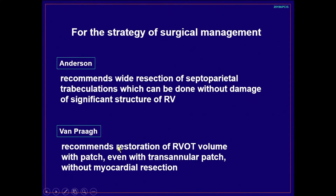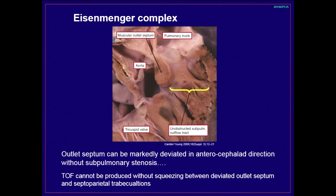They also have two different ideas for the strategy of surgical management. Dr. Anderson recommends wide resection of septoparietal trabeculations, but Dr. Bampra recommends just the restoration of infundibular volume with a patch instead of myocardial resection. This is the Eisenmenger complex — as you can see, there is an anterocephalad deviated outlet septum here, but there is no right ventricular outflow obstruction. This is why Dr. Anderson emphasized septoparietal trabeculations in making tetralogy of Fallot.